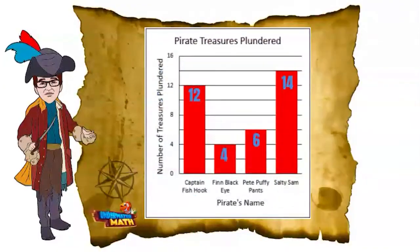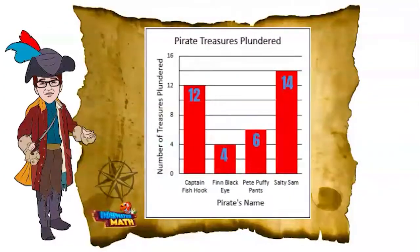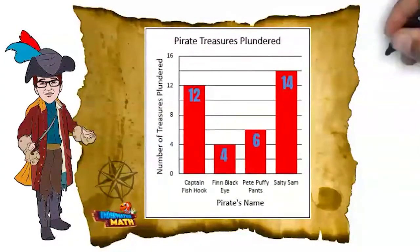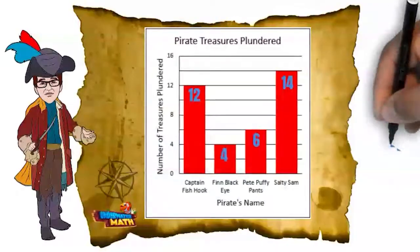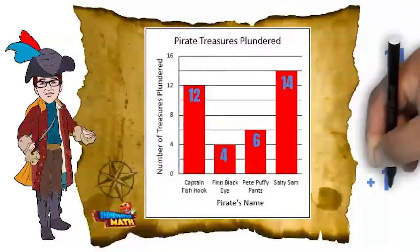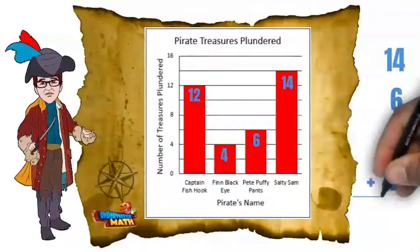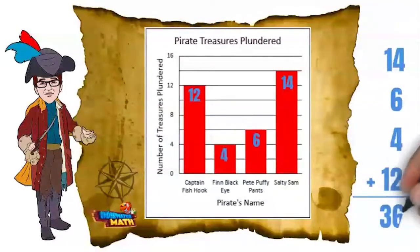You might be wondering how much treasure we plundered in all. You can find this by adding up the amount of each bar. 14 plus 6 plus 4 plus 12 equals 36.